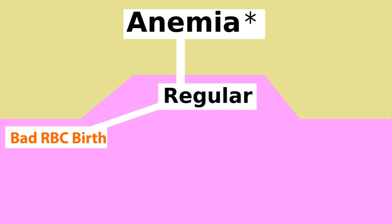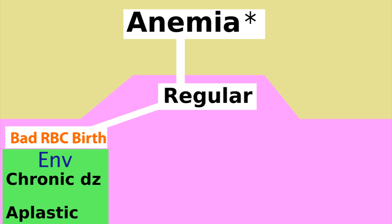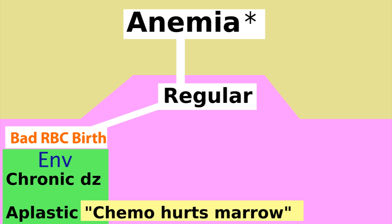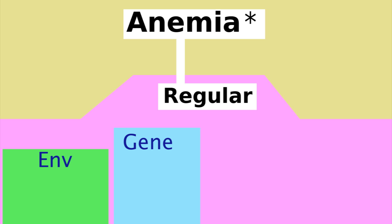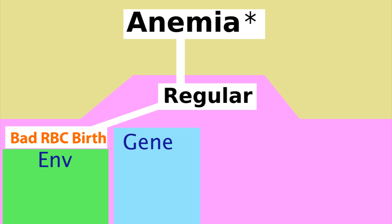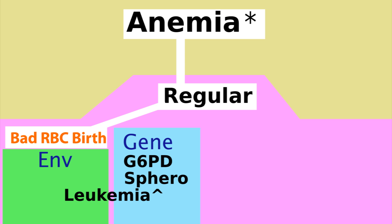Bad cell birth due to the environment includes chronic disease exhausting your body, or aplastic anemia, like when chemotherapy hurts your bone marrow. Genetically, bad cell birth anemias are caused by a bad G6PD enzyme, having spheres for membranes instead of biconcaves, or leukemia, not necessarily genetic.